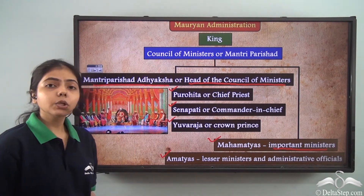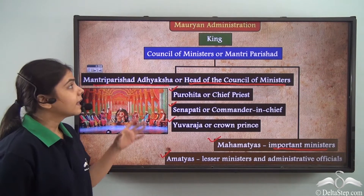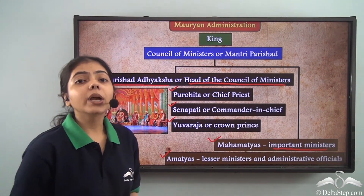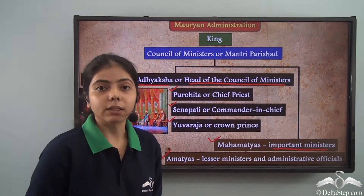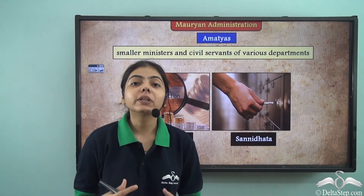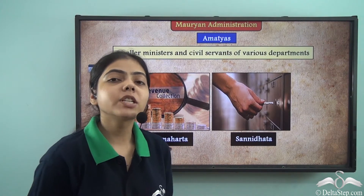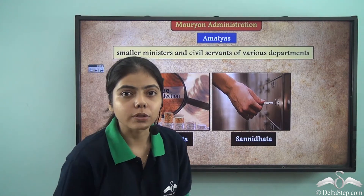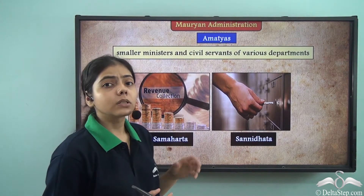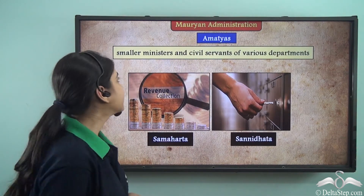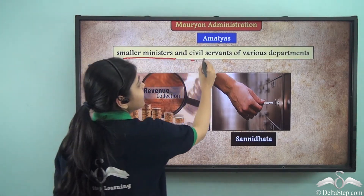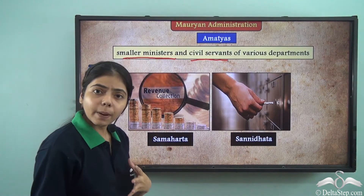One important thing to note is that these Mantris were appointed on the basis of their birth. The Mauryan administration was further divided into specialized divisions governed by the Amathyas, who were the smaller ministers and civil servants of various departments.